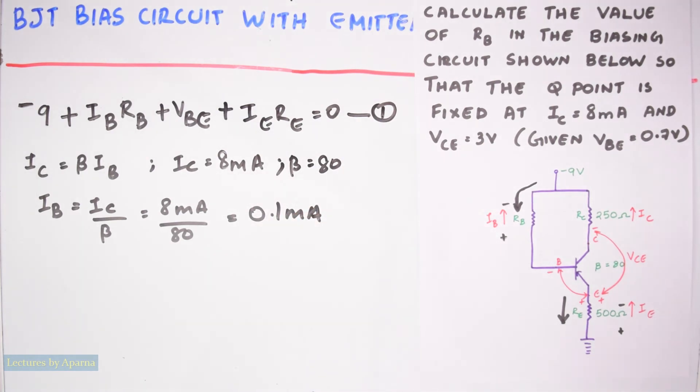Now find IE. IE is equal to beta plus 1 IB. So we can write 80 plus 1 into IB is 0.1 into 10 raise to minus 3. So we can write IE is equal to 8.1 milliampere. So we got IB and IE.